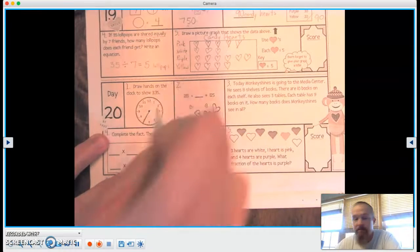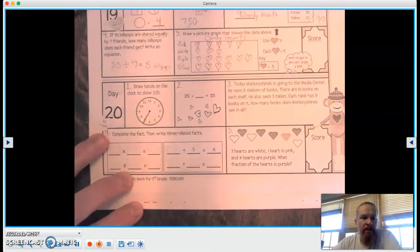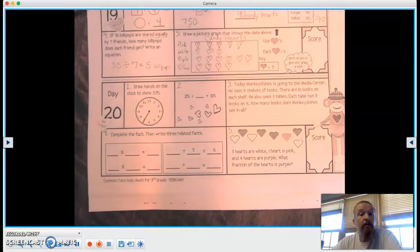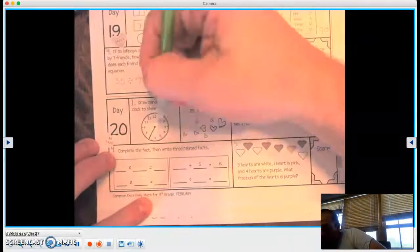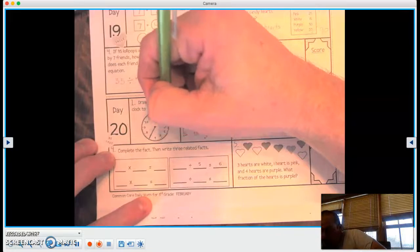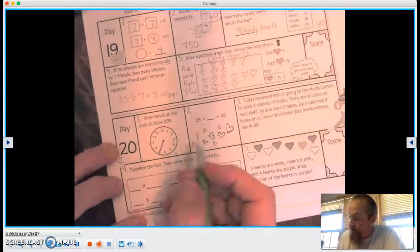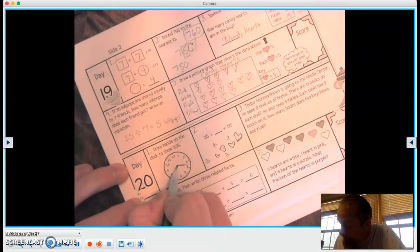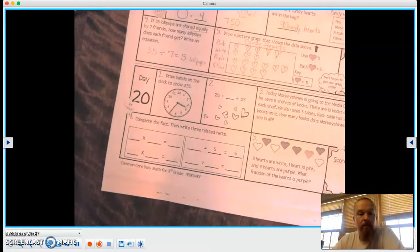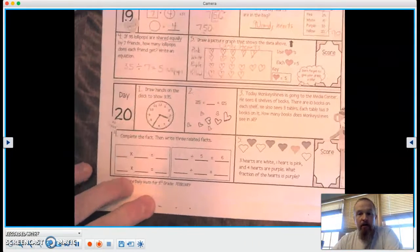All right, so we get that minute hand all the way out to the minutes, and it is 3:35. So our hour hand has to be somewhere between the 3 and the 4, right? So I'm going to put this, how about like right here? There we go, 3:35.